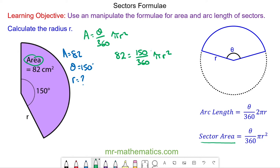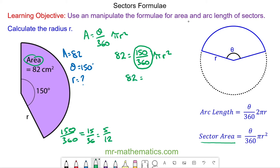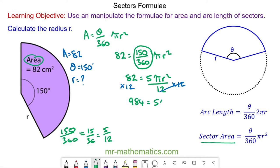I'm going to simplify the fraction. 150 divided by 360 simplifies to 15 over 36, which simplifies further to 5 twelfths. So 82 is equal to 5πr² over 12. Multiplying both sides by 12 gives 984, so 984 equals 5πr². Dividing both sides by 5π — the pis cancel and the 5s cancel.